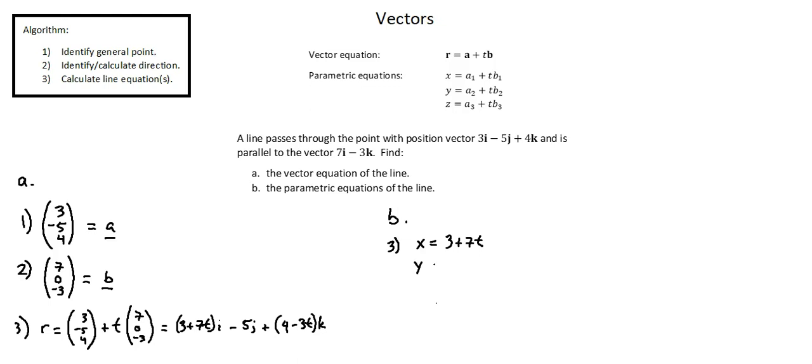Now we'll identify y as the coefficient of j from that equation, negative 5, and finally z as the coefficient of k, 4 minus 3t. That completes the parametric equations of the line.